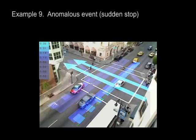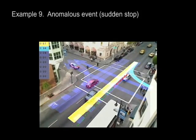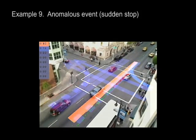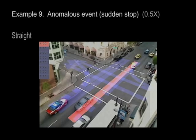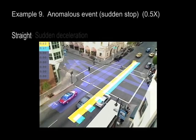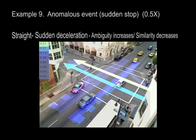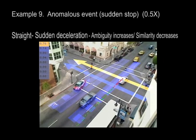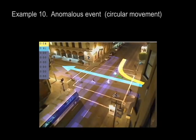This track, identified by our approach as anomalous, shows a car suddenly stopping in the intersection due to a pedestrian. It starts with a normal straight movement. Suddenly, it decelerates. Then, ambiguity increases and similarity decreases, resulting in the track being classified as an anomaly.